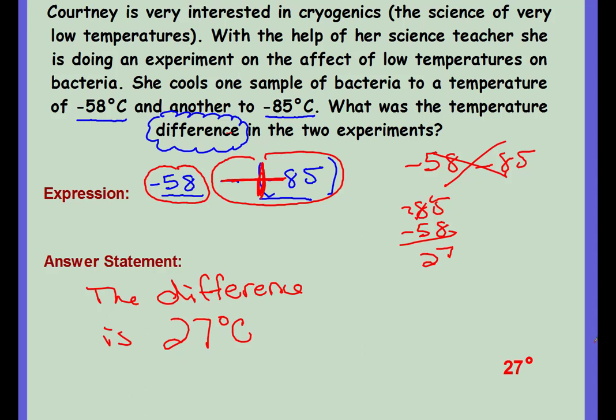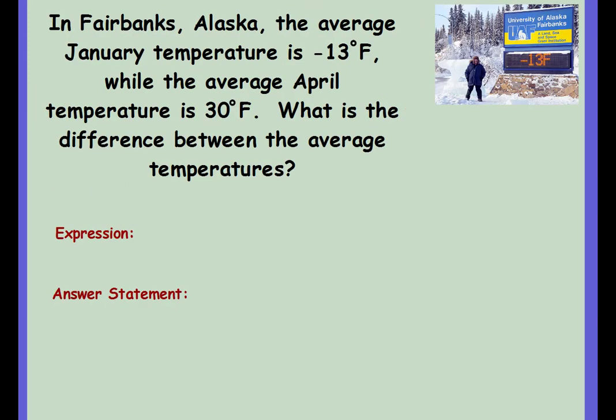So be very careful. Anytime with these integers, you see that word difference, you need to think, oh, I'm going to have a double negative. Let's try one more. In Fairbanks, Alaska, the average January temperature is negative 13 degrees Fahrenheit, while the average April temperature is 30 degrees Fahrenheit. What is the difference between the average temperatures? So again, we're looking for the difference, so we're subtracting. So one temperature minus the other temperature. So the larger temperature is 30 degrees, so it's going to be 30 minus the smaller temperature, which is a negative 13. Difference means double negative, and there's our double negative.